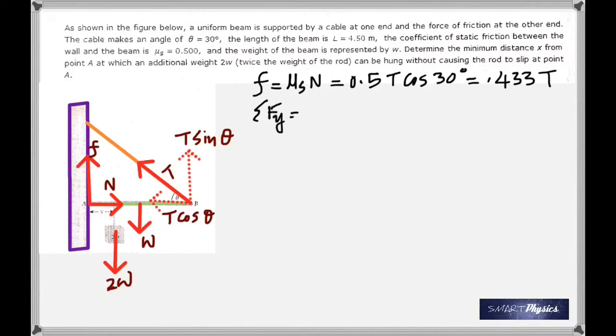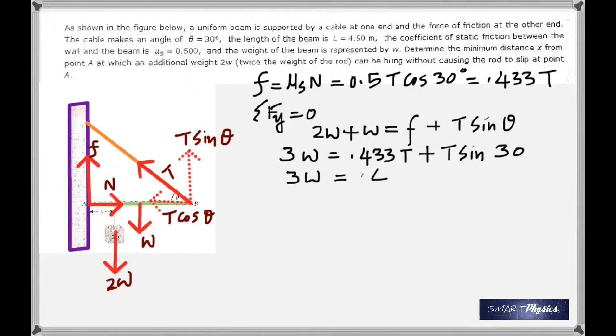If the net force along the y-axis is zero, you are going to say 2W plus W is equal to f plus T sin 30, or T sin theta. But we already know that f is 0.433 T plus T sin 30 degrees. Sin 30 degrees is 0.5, so on the right side when you add 0.433 T plus 0.5 T.